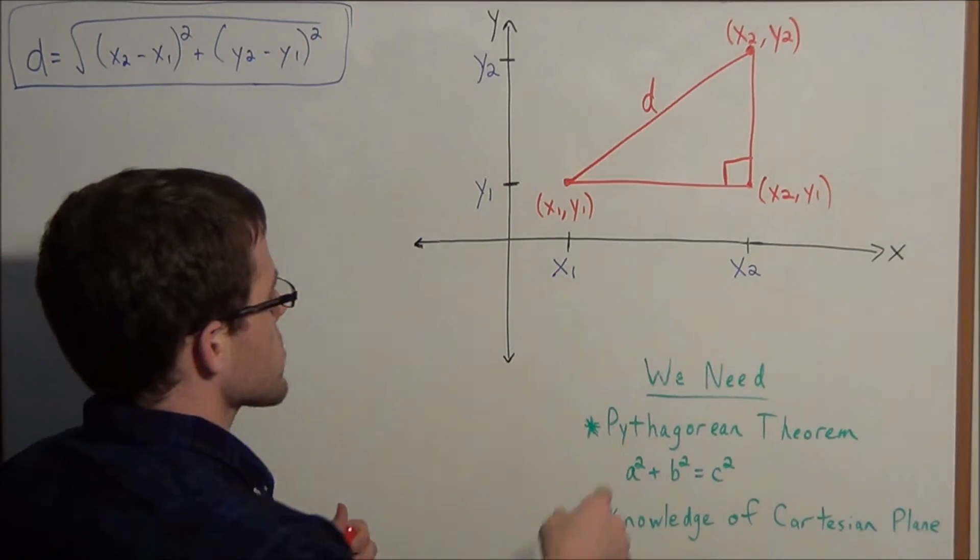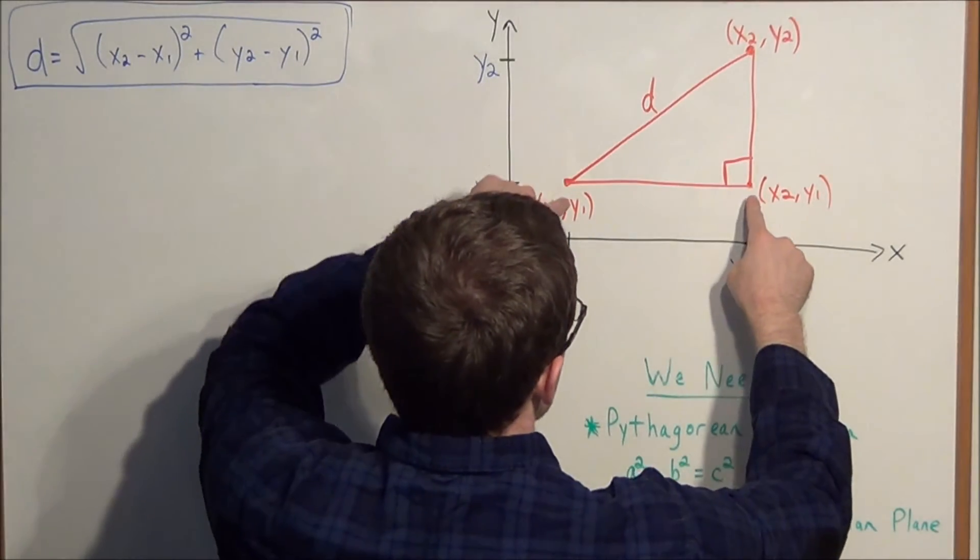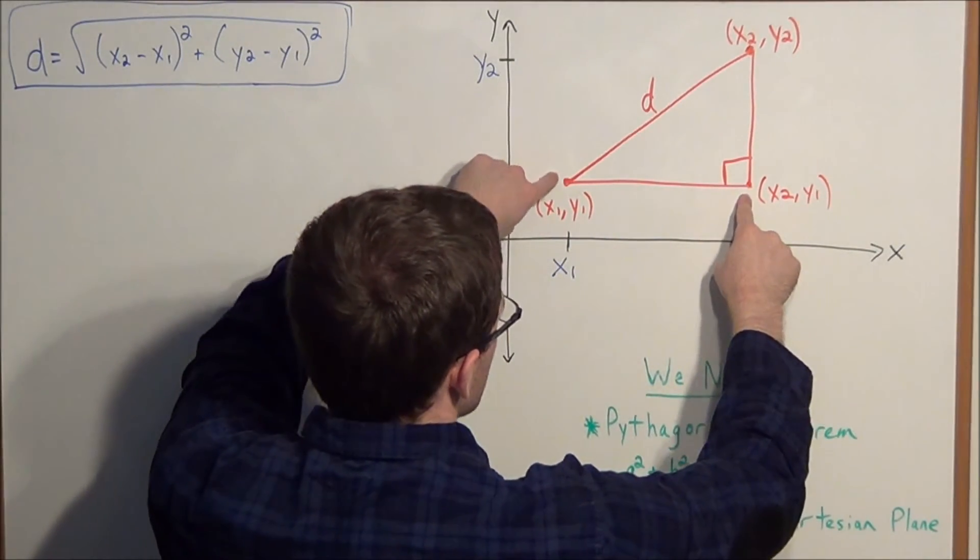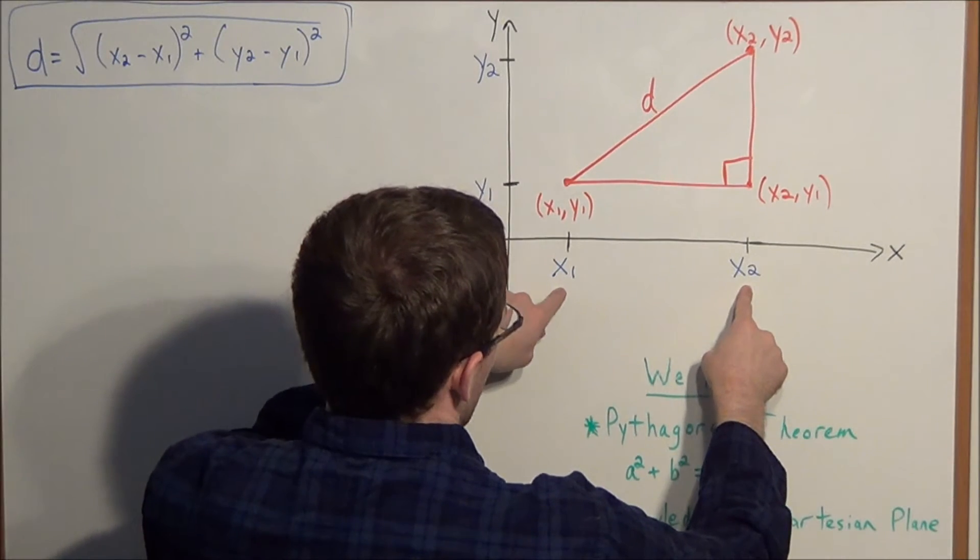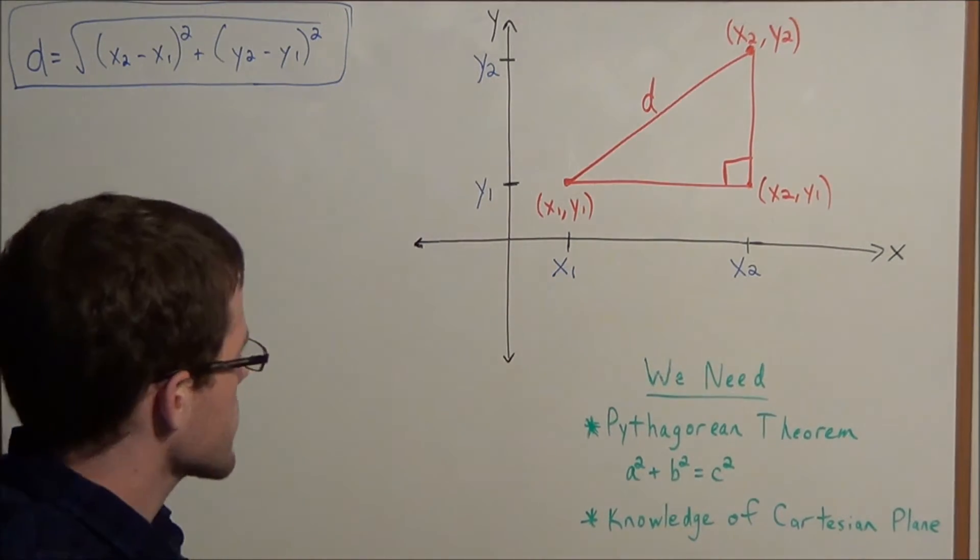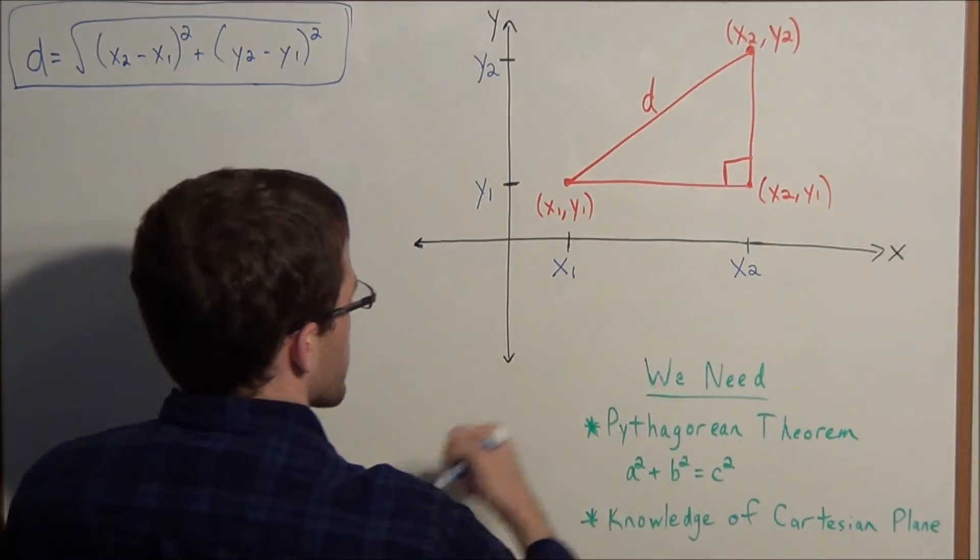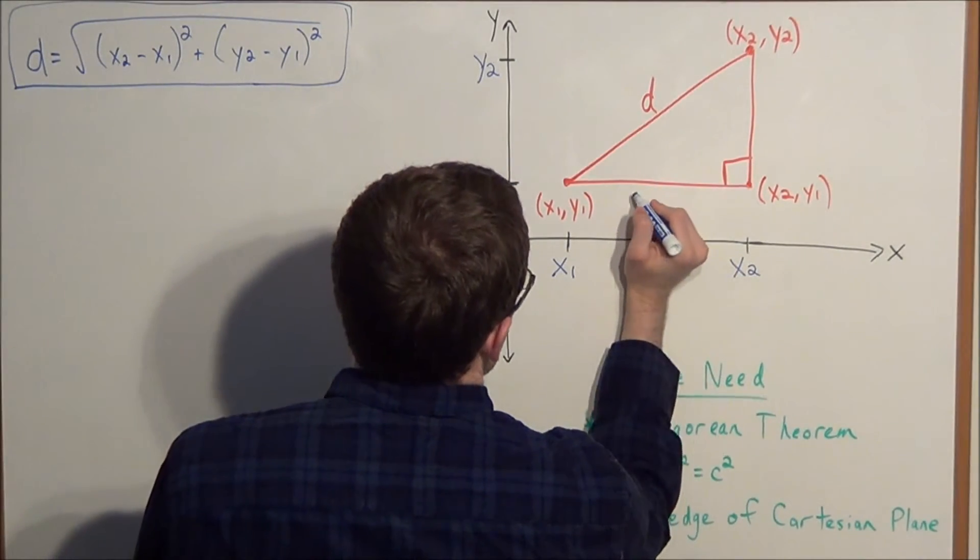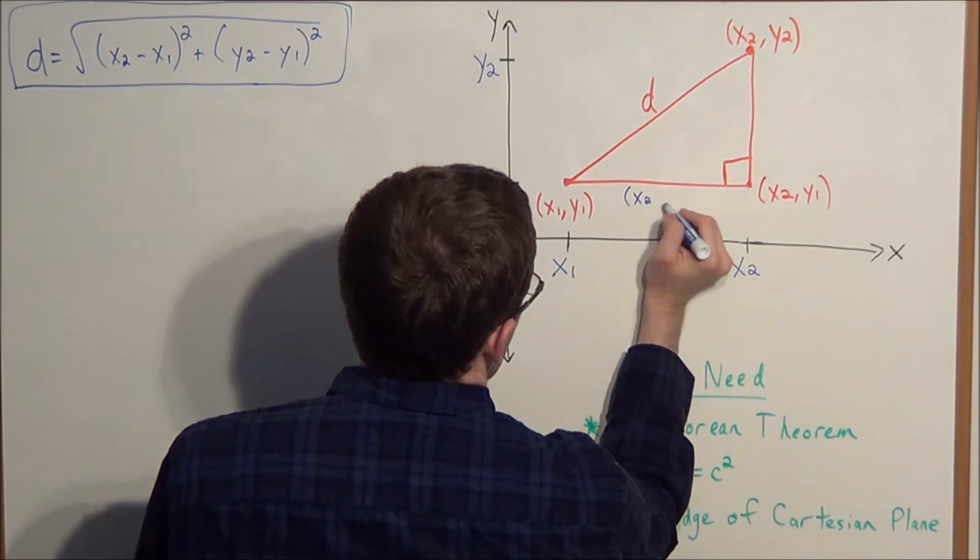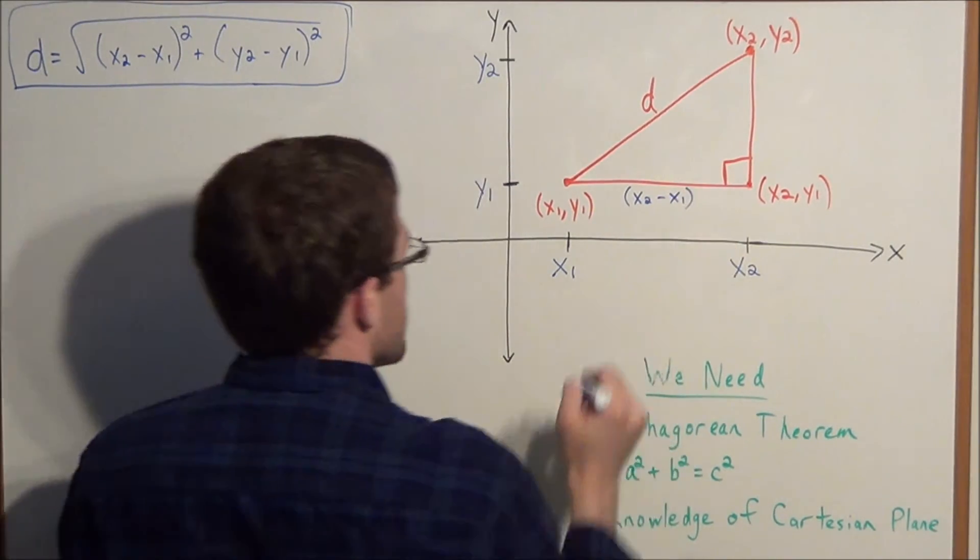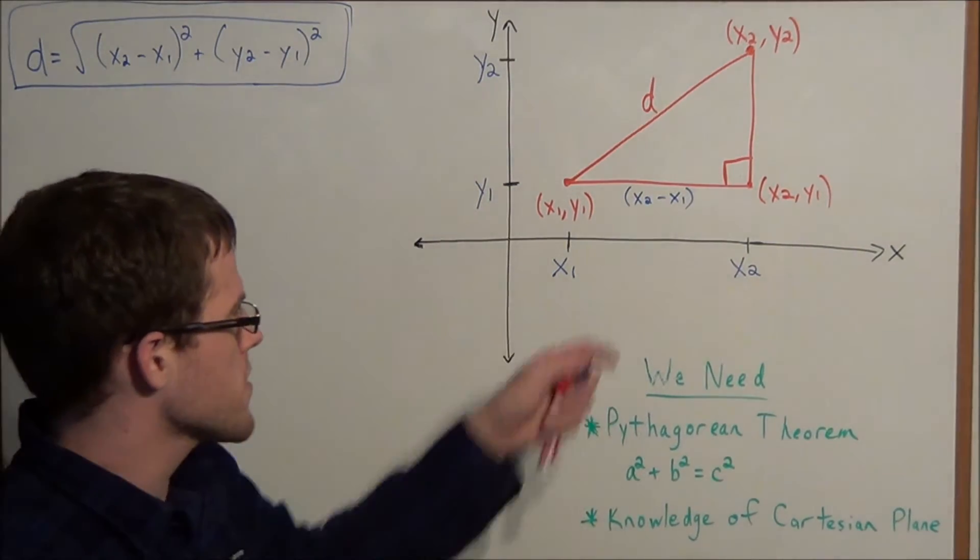Well this horizontal leg, what could we call this leg if it's sandwiched between the x coordinates x2 and x1? Well subtraction is a really effective way to model the distance between two coordinates. So we could call this leg x2 minus x1. And a quick explanation of why this works.